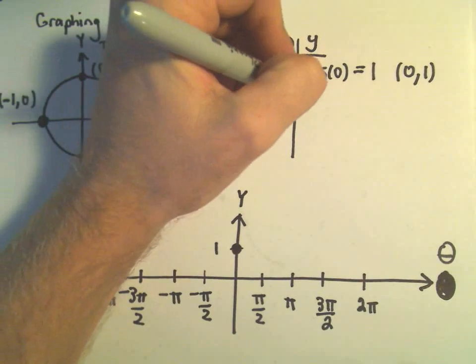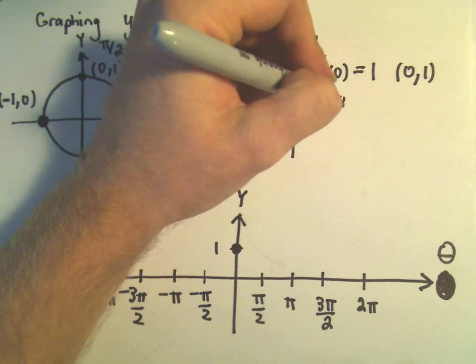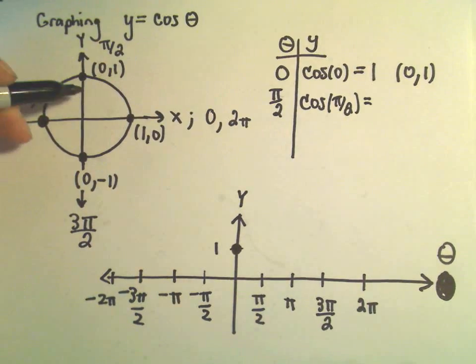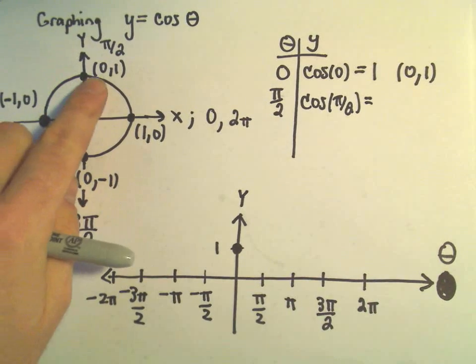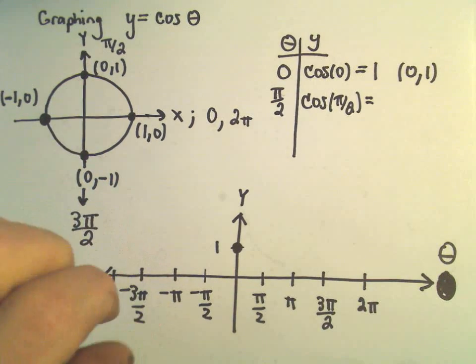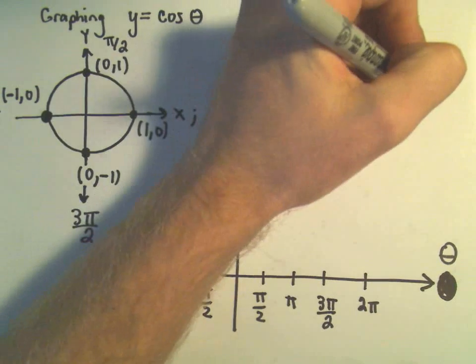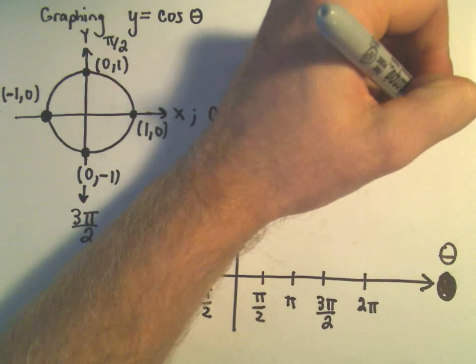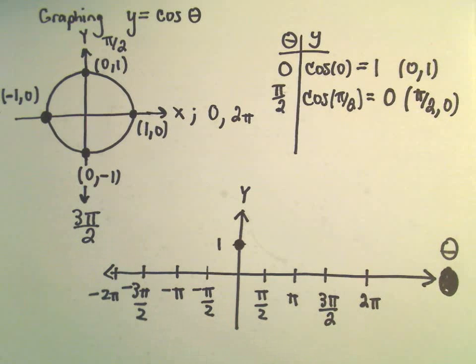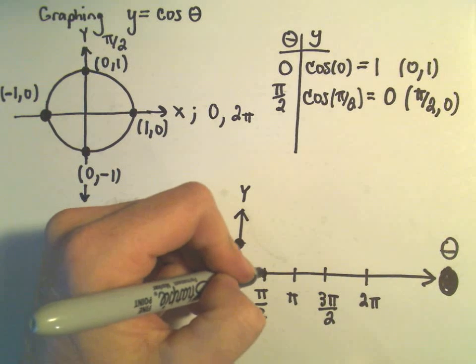And now I just start kind of moving along. At π/2, we'll get cosine of π/2. But at π/2, the x-coordinate is 0. So cosine of π/2 is simply going to be defined to be 0. And that tells us that the point π/2, 0 is going to be a point on the graph. So I can put a dot right there.